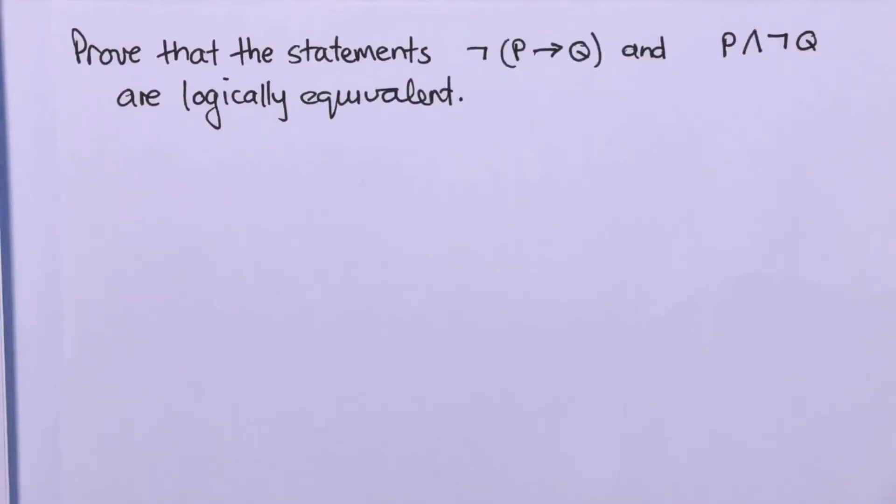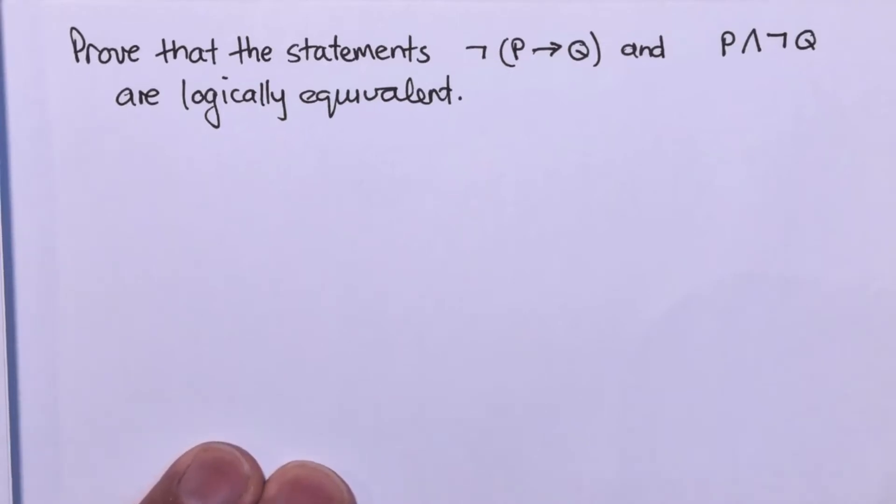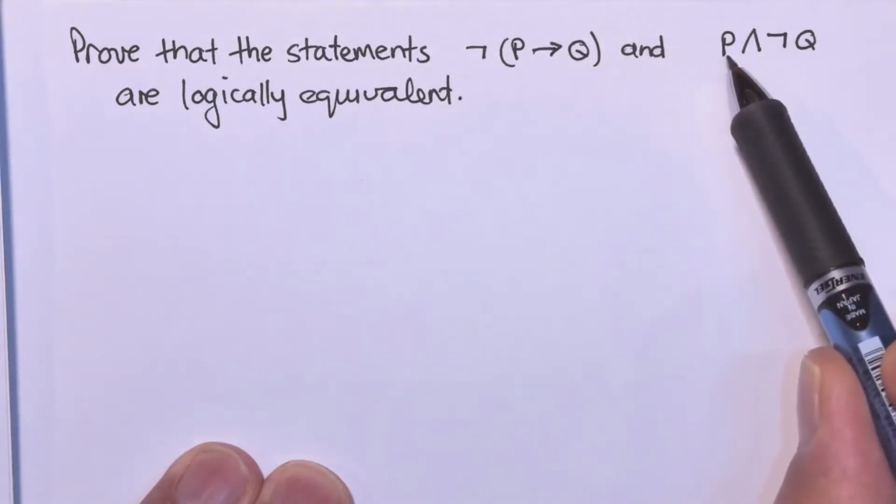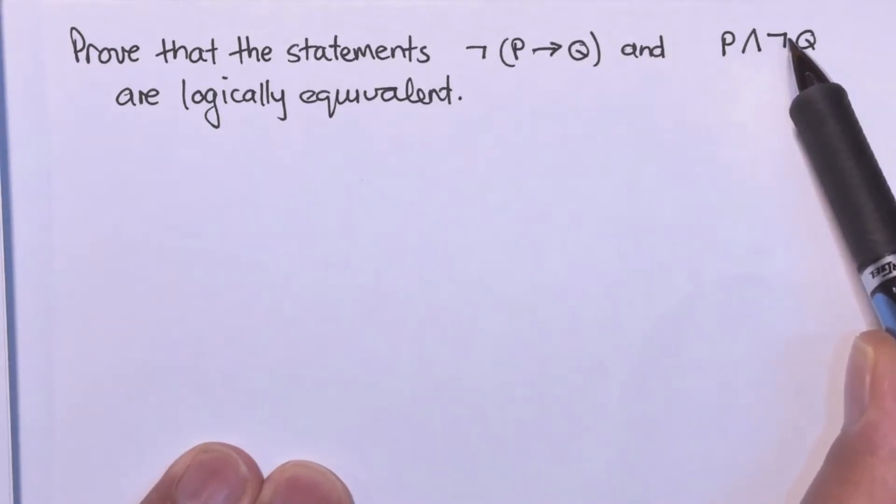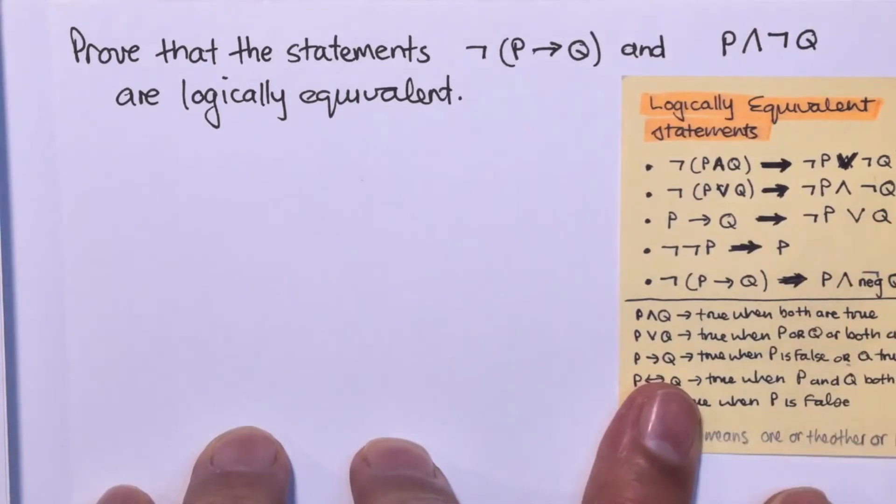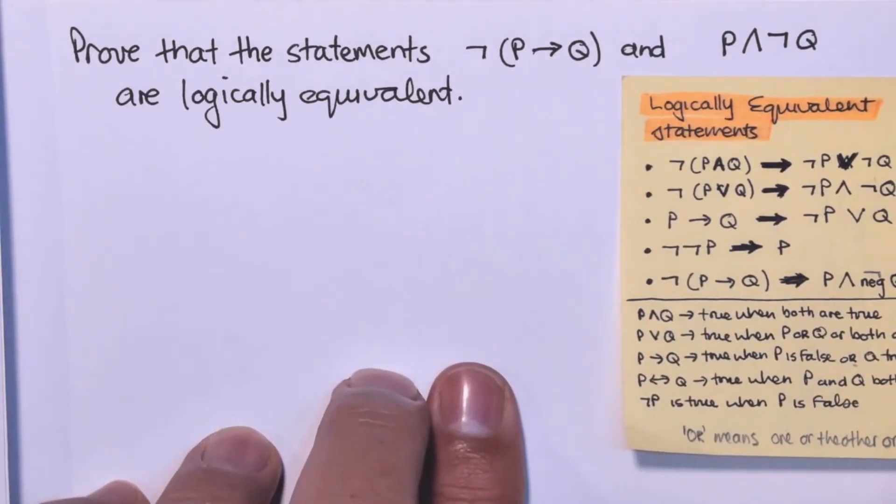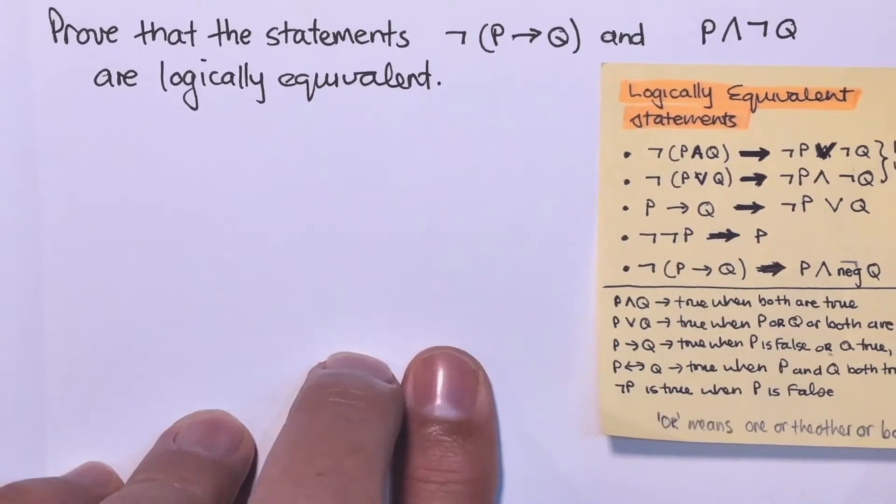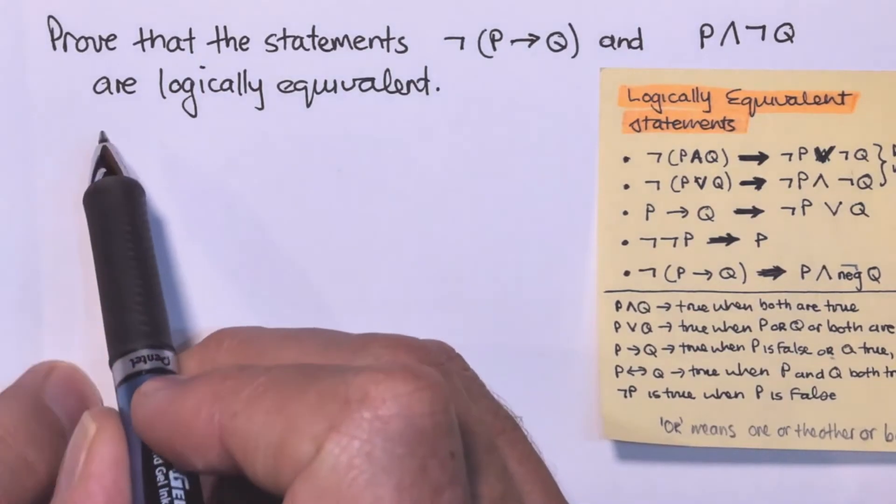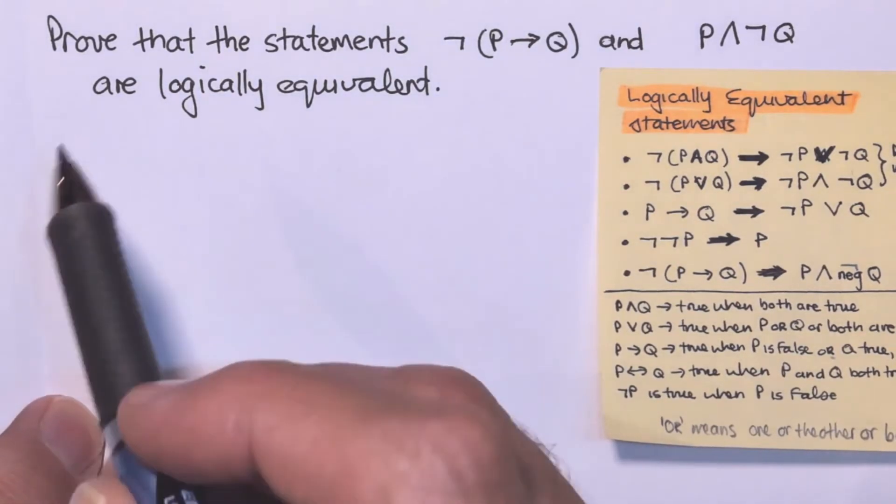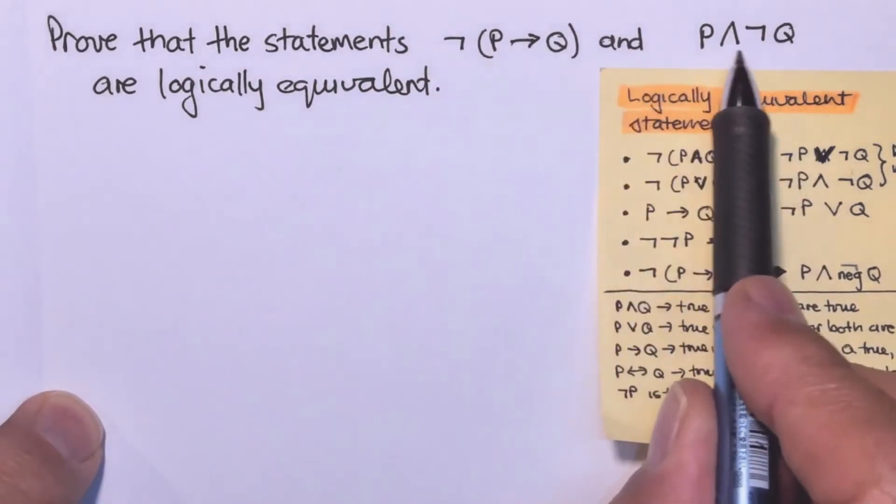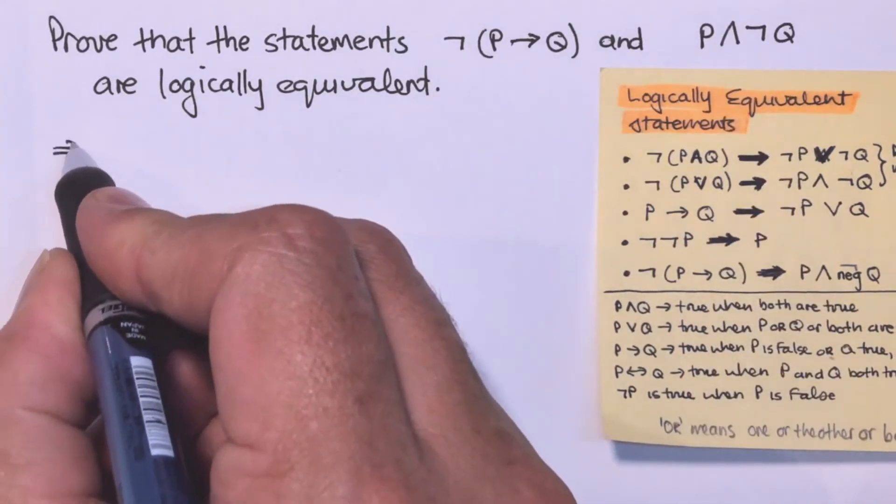Let's do an example. The example asks us to prove that the statements NOT IF P THEN Q and P AND NOT Q are logically equivalent. Now we bring our little notes in that will help us remember what it is we're supposed to know by now and we are still trying to commit to memory. So let's have a look. We're going to start our proof with one of the statements.